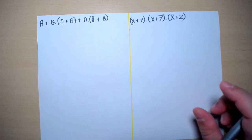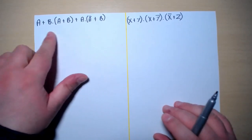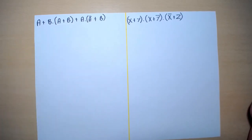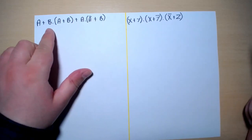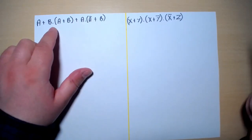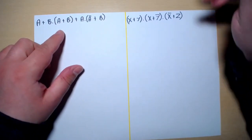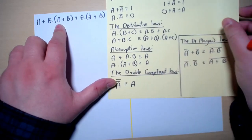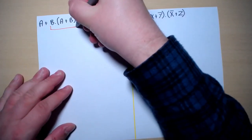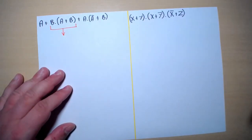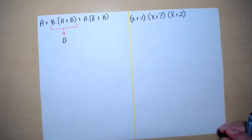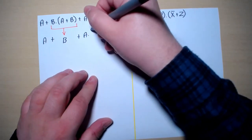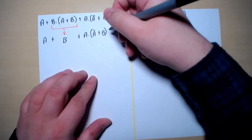Here we have another example with three sets of brackets. We have B and A or B — that is, B into A or B. Comparing this with the absorption law, this can be simplified and written as B. So now we have A or B or A into A-naught or B, using the absorption law.